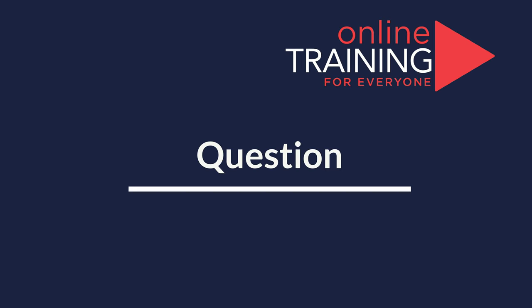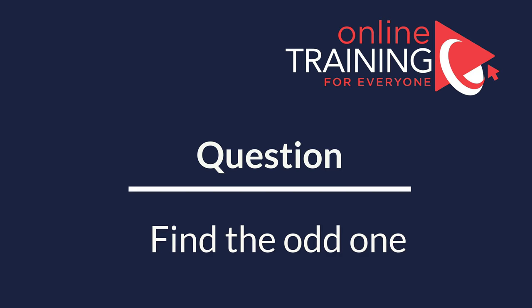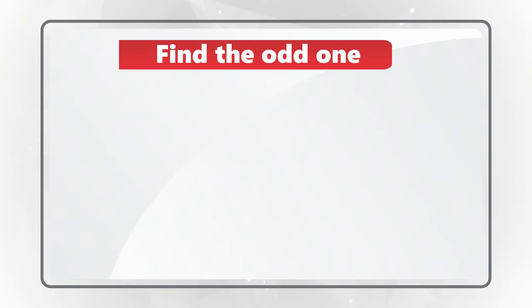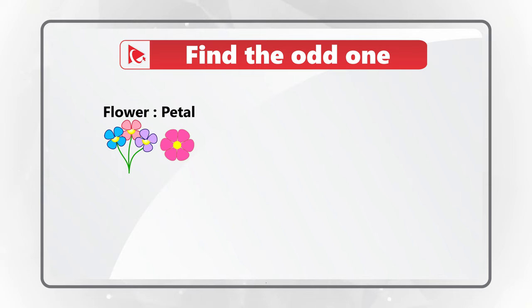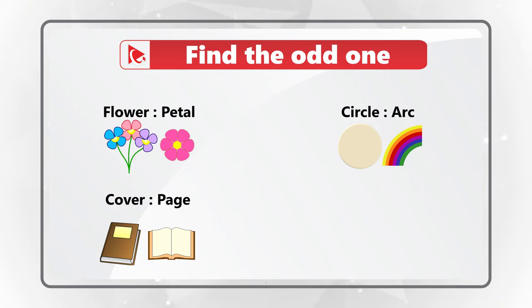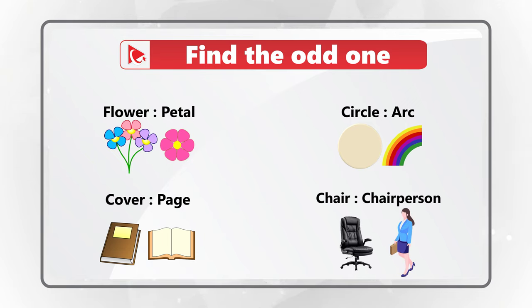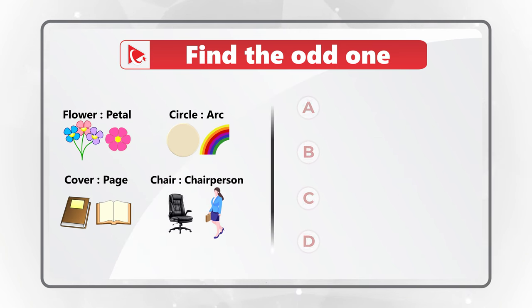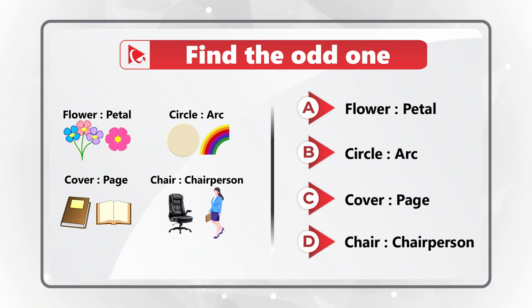Here is an amazing question where you are presented with four word pairs, and you need to find the item that does not belong to the group. The first pair is flower and petal. The second pair is circle and arc. The third pair is cover and page. And the fourth pair is chair and chairperson. You need to select the word pair that does not belong to the group.